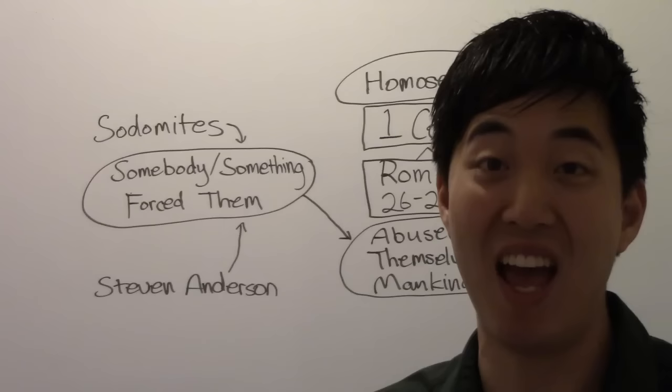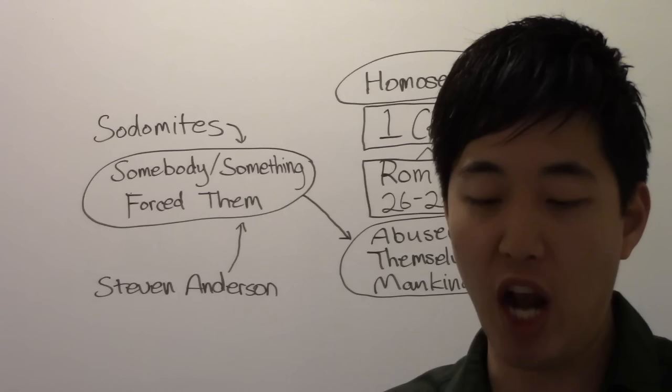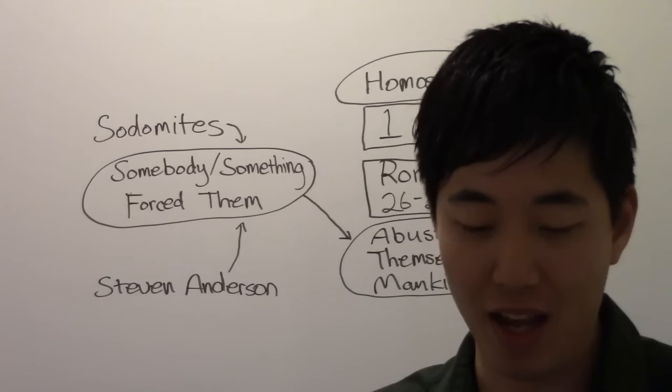Verse 26: For this cause God gave them up unto vile affections. For even their women did change the natural use into that which is against nature. Isn't that abusers of themselves with mankind? They're abusing their own body.